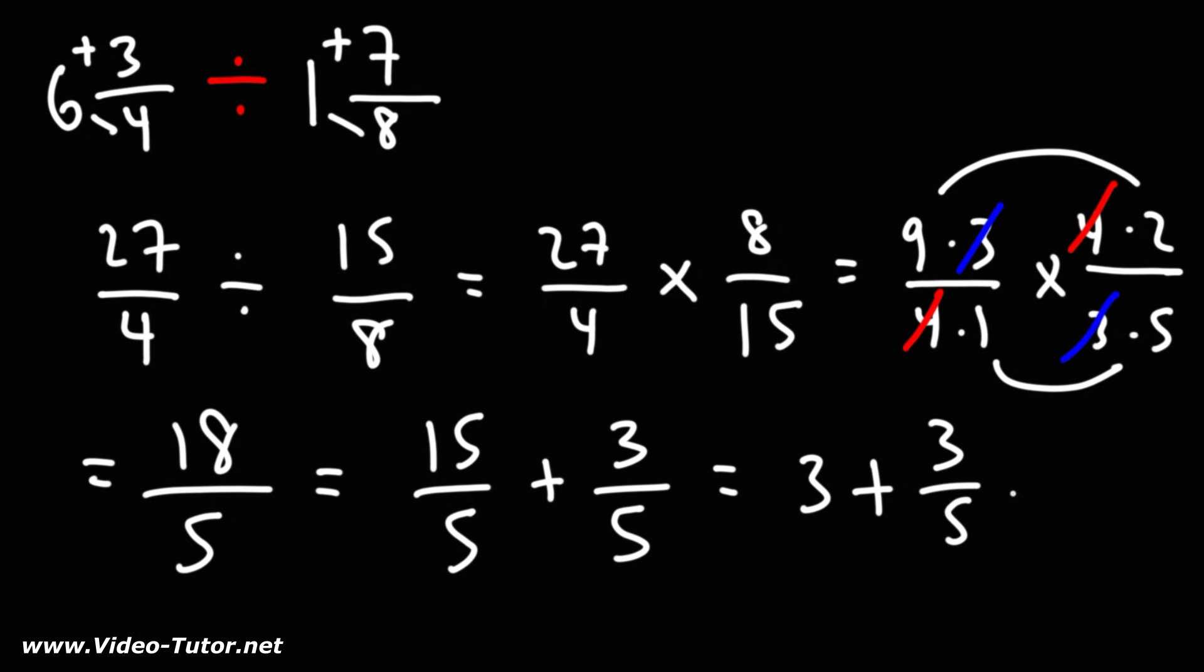So we have 3 plus 3/5. Now when you have a whole number and a fraction, you can write that as a mixed number. This is 3 and 3/5. So that is the answer as a mixed number.